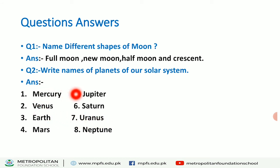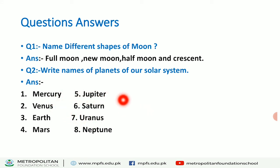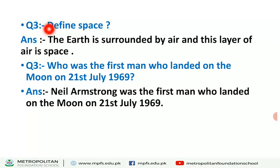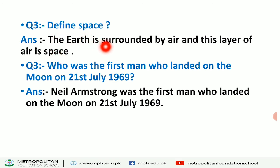These are the eight planets — you must memorize them very well. If you learn them now, it will be easy for you in higher classes too. Now define Space: 'The Earth is surrounded by air, and this layer of air is called Space.' The thin layer of air around the Earth is what we call Space.